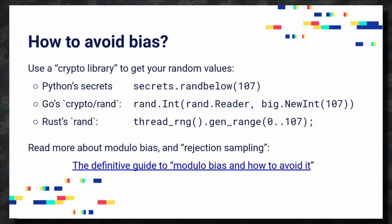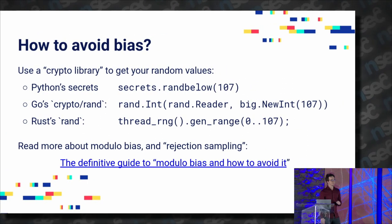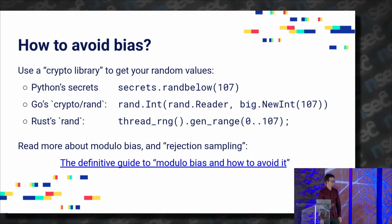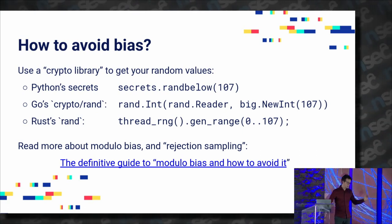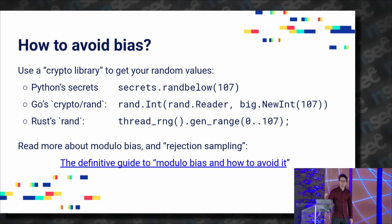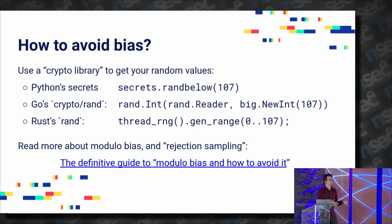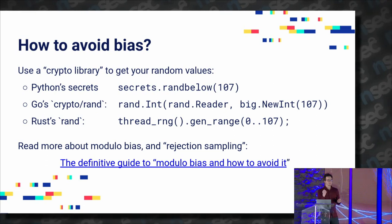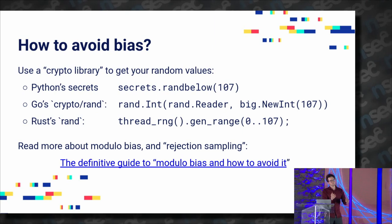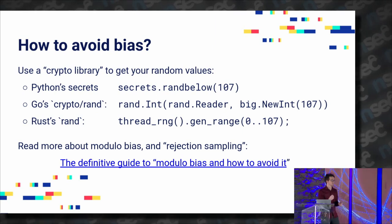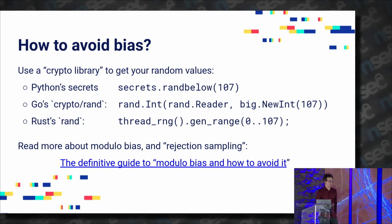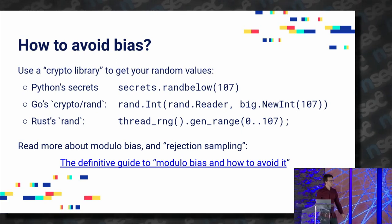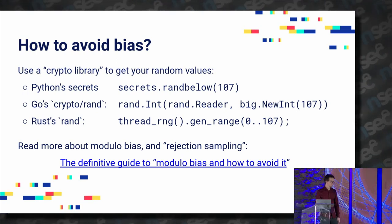The best way to avoid such bias is obviously to not do it yourself and rely on your cryptographic library. Python has a secrets module since Python 3.6. Go and Rust have very good random generator functions. But if you need to do it yourself, what you want is rejection sampling: pick a value at random, see if it's in the range you want, and if so you're fine; if not, reject it and pick a new one at random. That will be uniformly distributed and unbiased. I've got a cool link to a guide on modular bias and how to avoid it — a blog post I wrote two or three years ago.